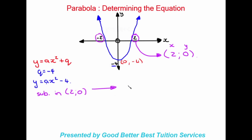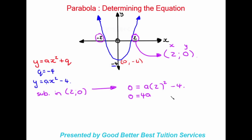We substitute into our equation: in the place of y we put zero, and in the place of x we put two, which will be squared, minus four. So we have zero equals a times two squared minus four. Expanding, two squared gives four, so we get zero equals four a minus four. Taking negative four over, it becomes positive four, giving us four a equals four. Dividing both sides by four, a equals one.